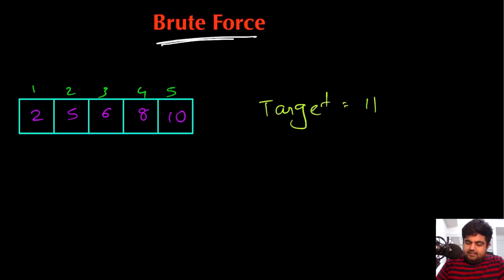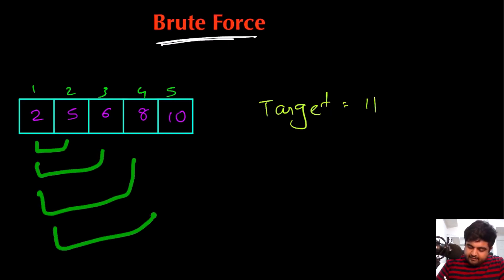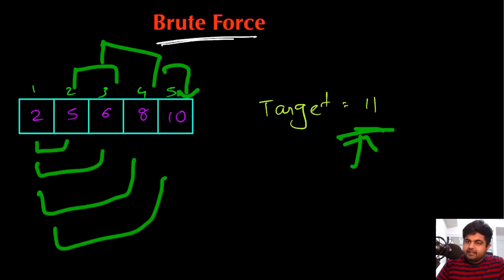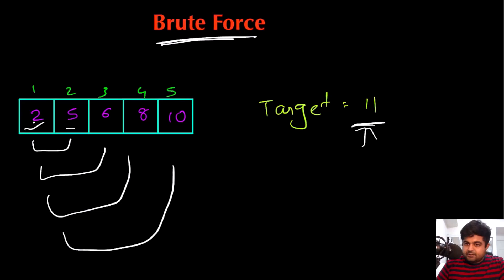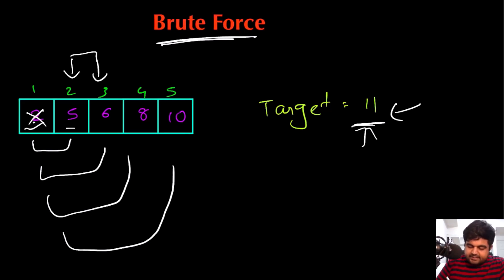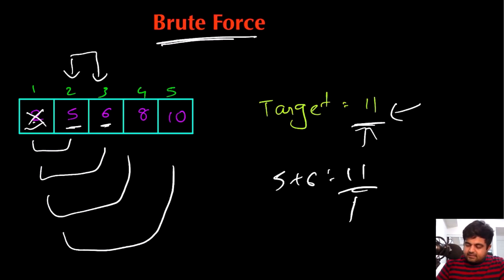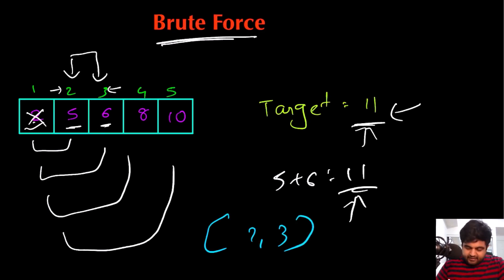The first approach is brute force. We take every possible pair and check whether they add up to the target value. If they do, we return their index numbers. For example, with target 11, we start with the first number and try all possible pairs — finding no sum of 11. Then we start with the second value, and when we compute five plus six we get 11. We return index values two and three.